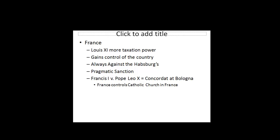In France, you see a little bit different. Louis XI also gains more power over taxation. He will control the French state, and France is always in opposition to the Habsburgs. To gain more taxation power, you see the beginning of what's called the Pragmatic Sanction, which allowed the French government to tax the church. Pope Leo X does not like that, so he works out a deal with Francis I, called the Concordat of Bologna, which allows France to control the Catholic Church inside of France.